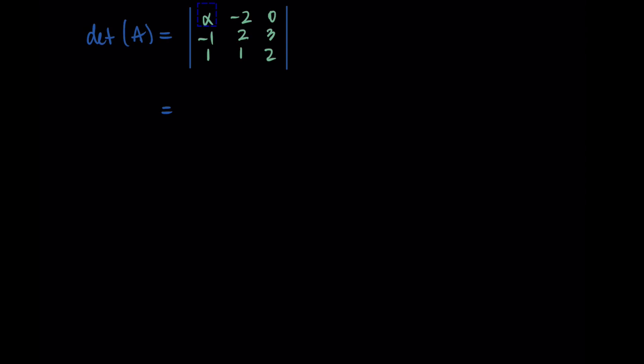All right, so I'm going to expand across the first row. I'll start by taking alpha and then multiplying by the determinant of the matrix 2, 1, 3, 2. Then I'll subtract my negative 2 times the determinant of the matrix, negative 1, 1, 3, 2. And then I'll add zero times the determinant of the matrix, negative 1, 1, 2, 1.